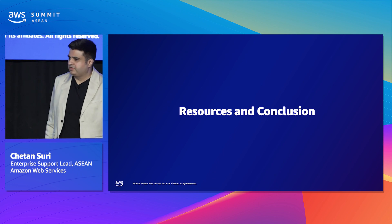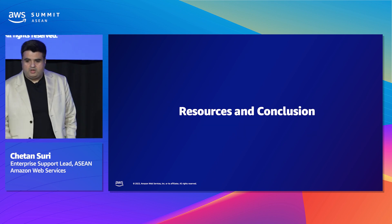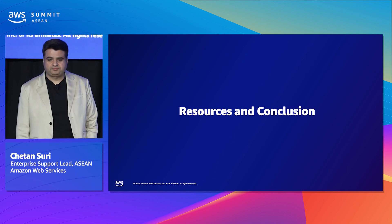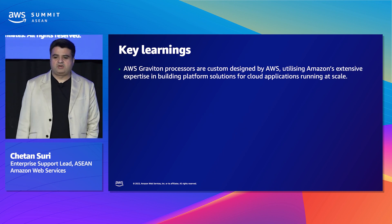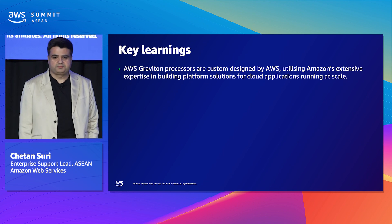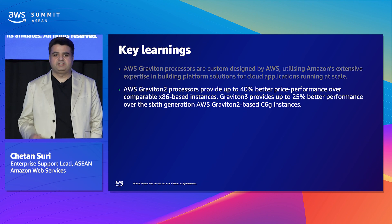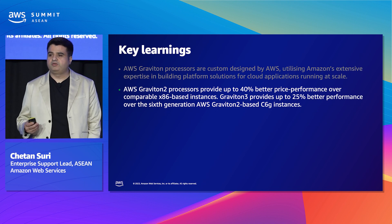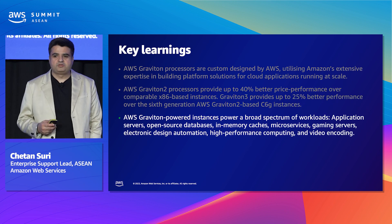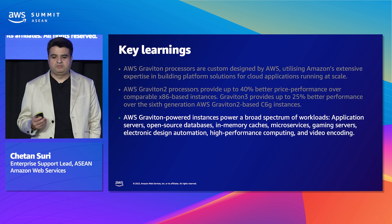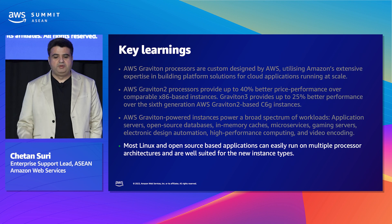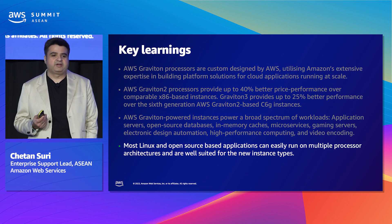Those were some of the key learnings customers can adopt when moving to Graviton. Key conclusions: Graviton processors are custom-designed by AWS to deliver better price performance in the cloud. Graviton 2 provides 40% better price performance compared to comparable x86-based instances, and Graviton 3 provides up to 25% better performance than Graviton 2. Graviton-powered instances can be used for a wide variety of workloads — application servers, in-memory caches, microservices, gaming servers, and high-performance computing. Most Linux and open source-based applications can easily run on multiple processor architectures such as Graviton.